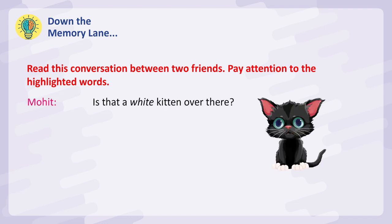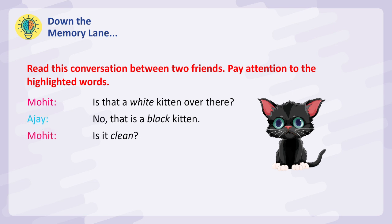Mohit: Is that a white kitten over there? Ajay: No, that is a black kitten. Mohit: Is it clean? Ajay: No, it looks dirty.